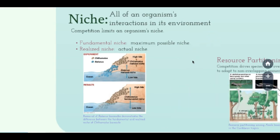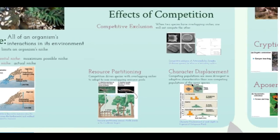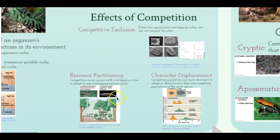The realized niche is the actual niche — the actual habitat and real interaction between the organism and environment. The fundamental niche is the maximum possible niche: where could it live if there were no competition? The barnacle experiment illustrates this distinction. Resource partitioning will be addressed next.